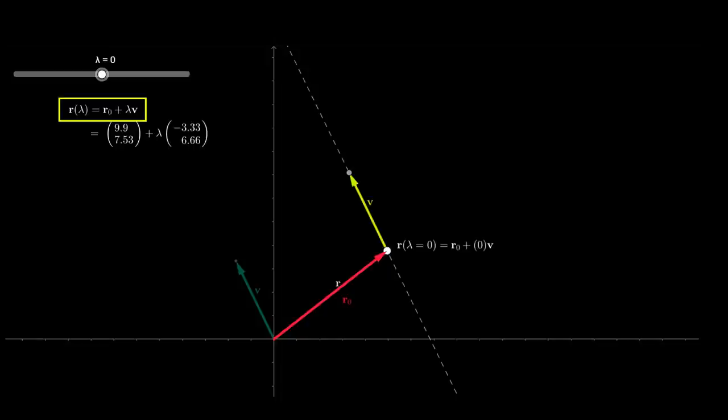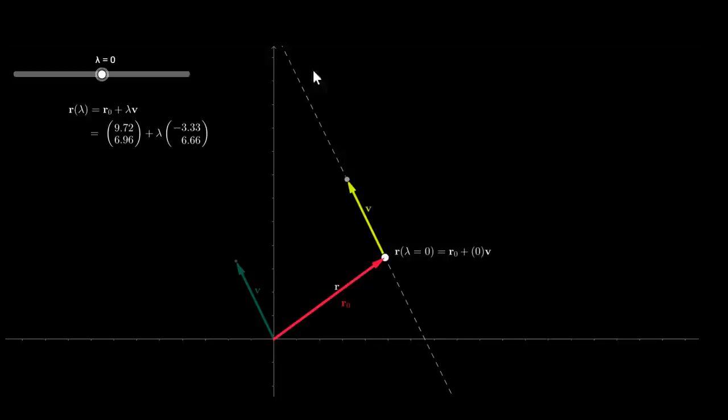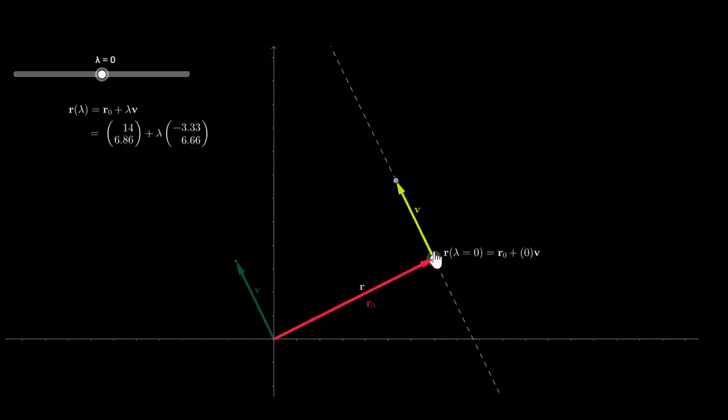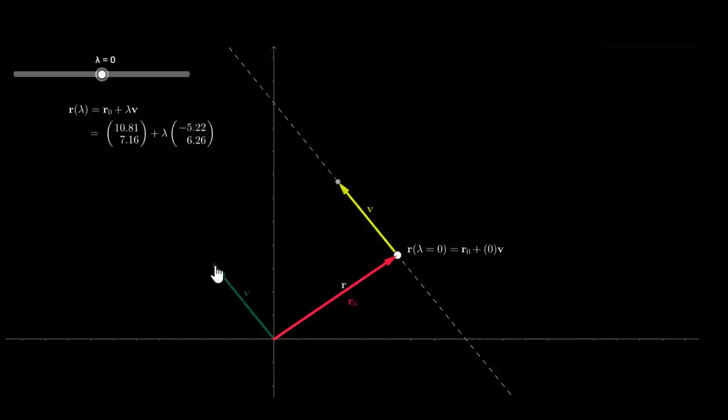This equation here is the parametric equation of a line. Vector r, which is a function of a parameter lambda, equals vector r0 plus lambda times vector v. This equation describes the line marked here as a dashed line. Here we see the vector r0 and the vector v. r0 is a vector which joins the origin to any point on the line, while v is just a vector which indicates the direction of the line.